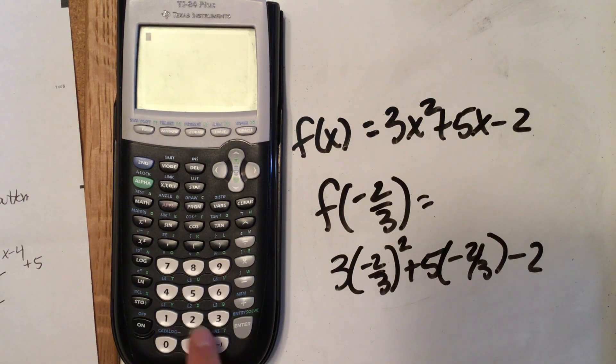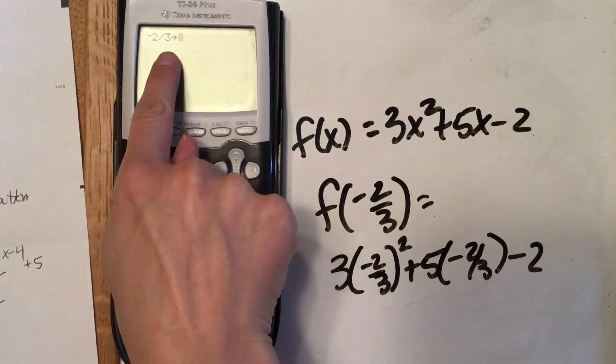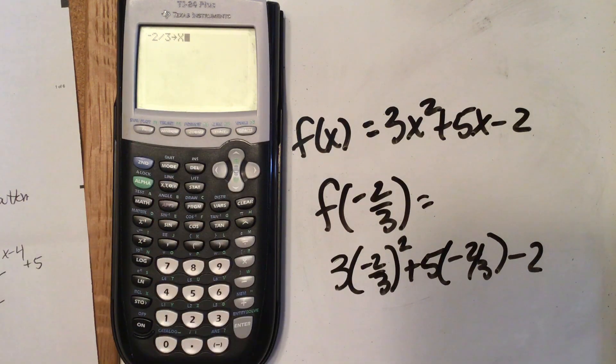So you're going to do -2 divided by 3, and then this button above on says STO for store, and you're going to store that. Notice it just puts an arrow, and you're going to store that to x, so you're going to hit enter.